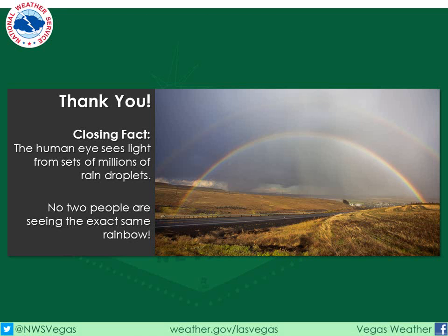We'll close with one last fact: since the human eye sees light from sets of millions of raindrops, and no two human eyes can be in the same place at the same time, no two people are seeing the exact same rainbow. If you have any questions, let us know in the comments or on Twitter or Facebook. Thanks for watching.